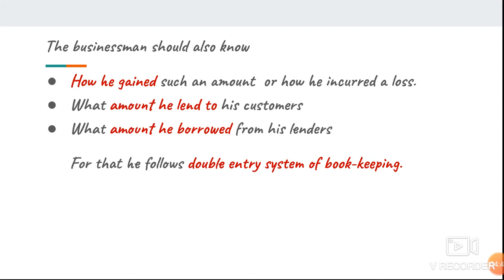A businessman also needs to know how he gained a certain amount or how he incurred a loss, because he needs to draft tactics and business policies. He needs to understand the reasons behind his profit or loss. Not only that, he also needs to know the amount he lent to his customers and the amount he borrowed from his lenders. In order to get all this information, he needs to keep books and record these transactions.